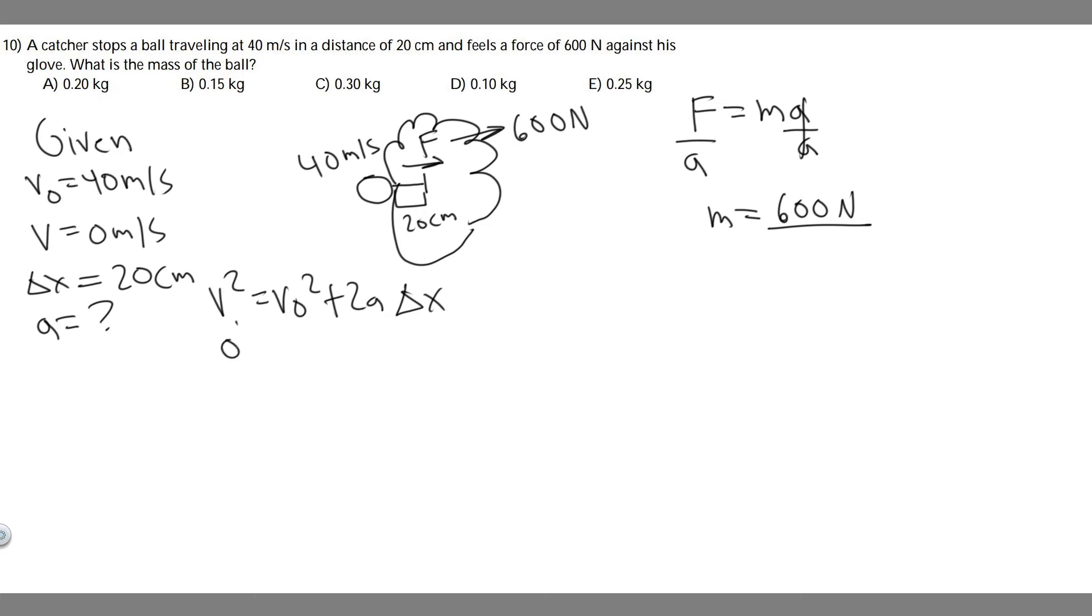We know v is just 0, so 0 squared is still 0 equals v sub 0 which is 40 squared plus 2 times a, a is what we're solving for, times delta x. Keep in mind we need it in meters not centimeters, so to convert you divide by 100 so it's 0.2.